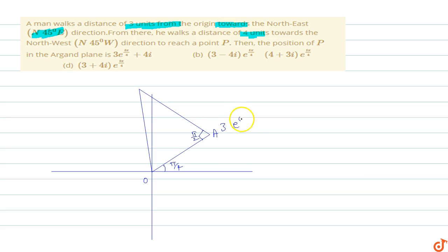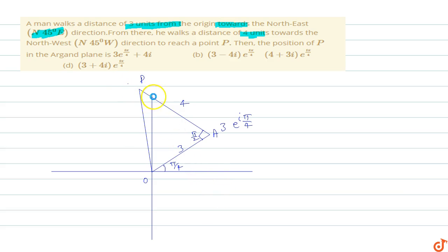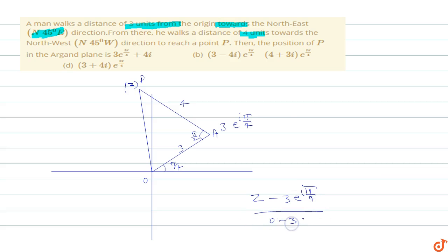In polar coordinates, the point A is represented as 3·e^(iπ/4), since OA distance is 3. AP distance is 4. So z is the complex number associated with point P. Since AP is perpendicular, we have (z − 3e^(iπ/4)) / (0 − 3e^(iπ/4)) equals e^(iπ/2), which gives us the rotation in the triangle.